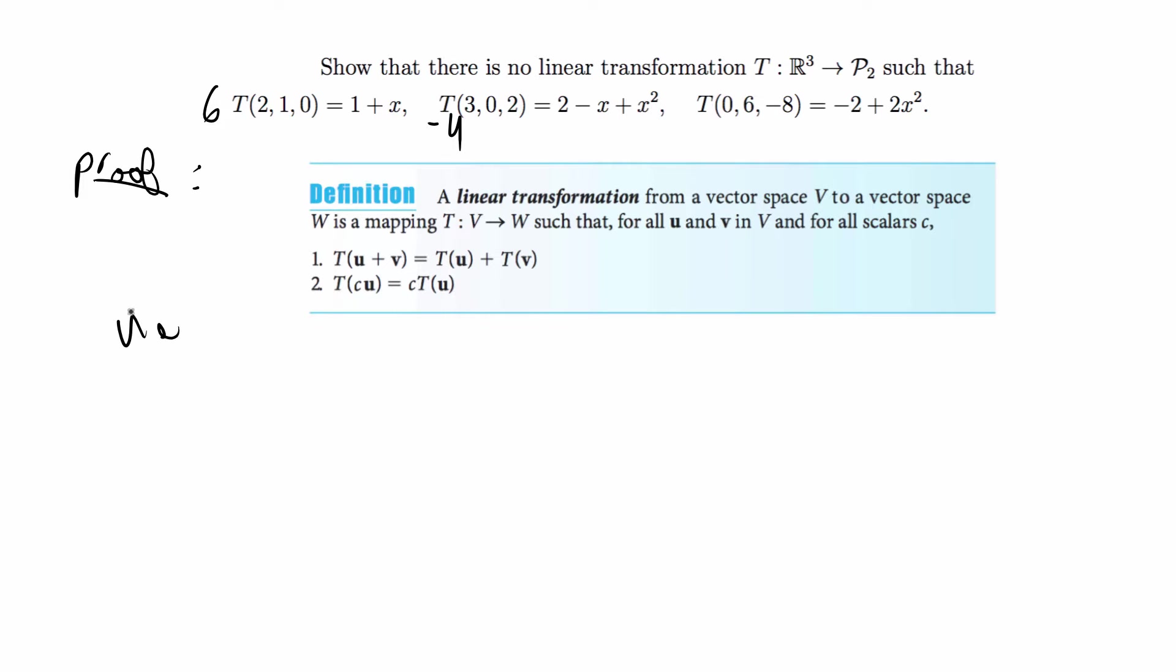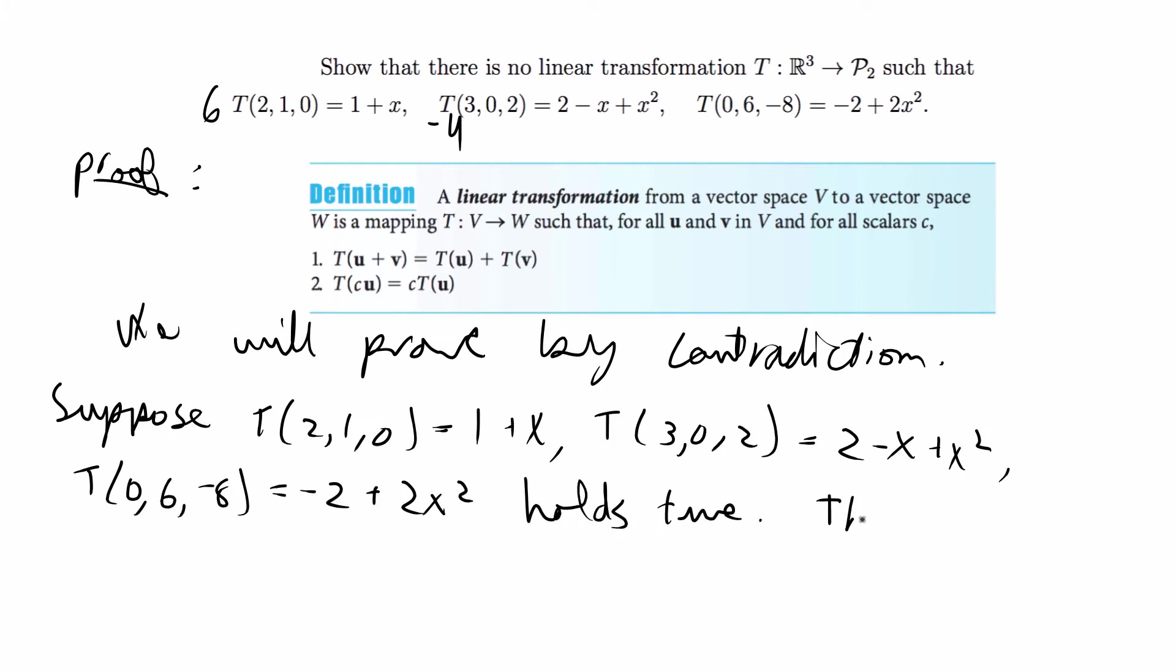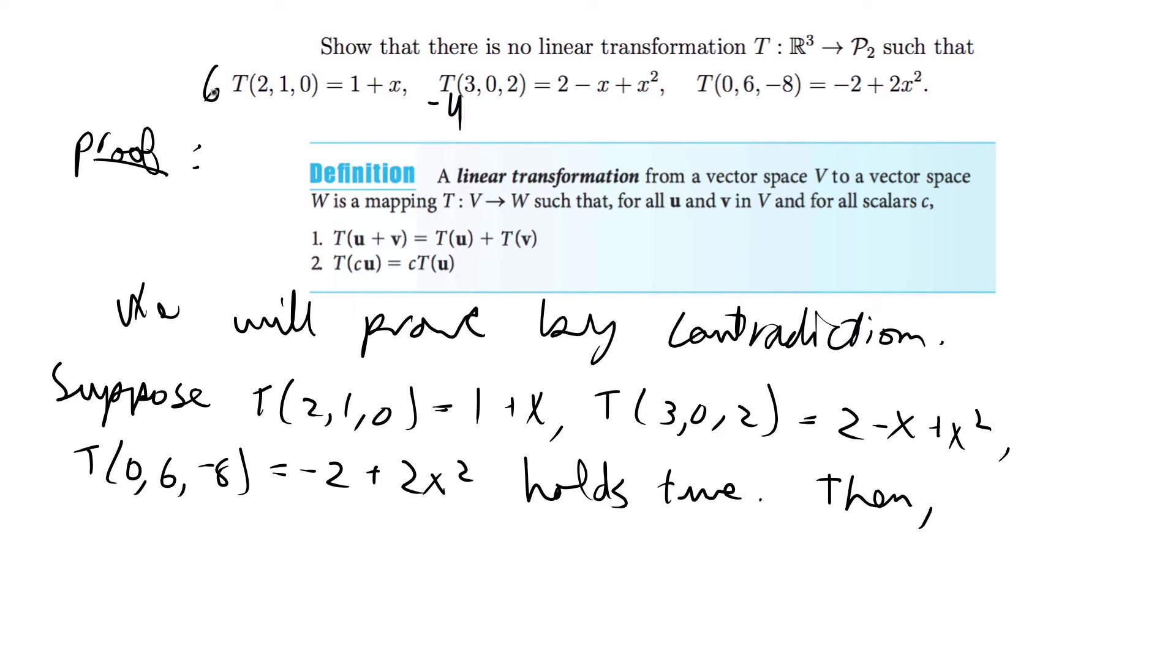So I said we will prove by contradiction and then I always say suppose that this is a linear transformation or suppose that the assumptions are true. Then, like I said, you should be able to do 6 times the values in here and negative 4 times the values in here and get the values in here. So if you do this, that will be, if you just distribute to the three values, that'll be T(12, 6, 0) plus the transform of negative 12, 0, negative 8.